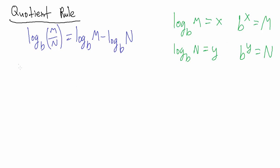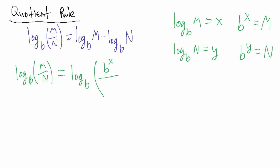Now let's come back and look at the base B log of M divided by N. We're going to use M = B^X and N = B^Y to simplify. So the base B log of M/N becomes the base B log of B^X divided by B^Y.